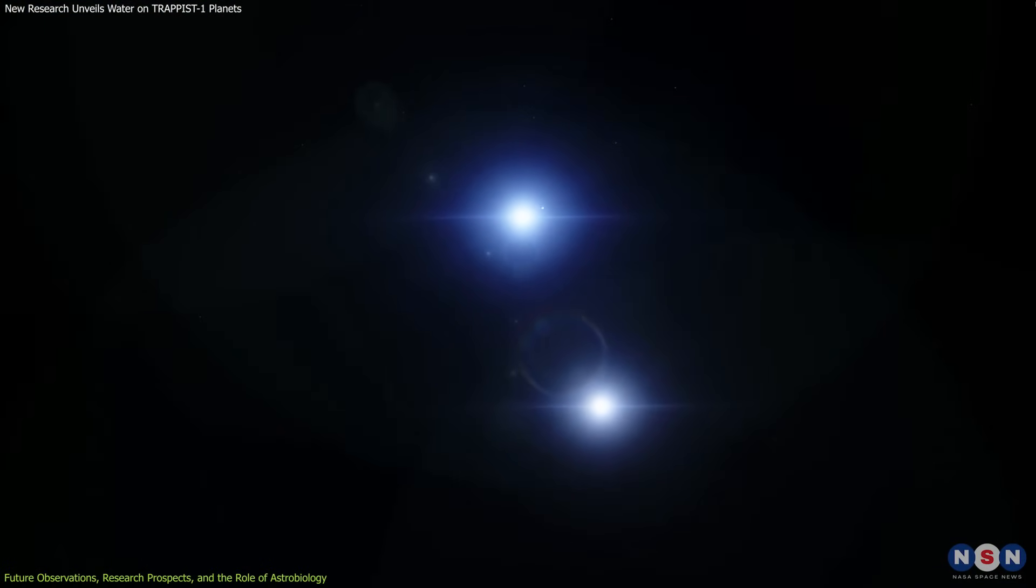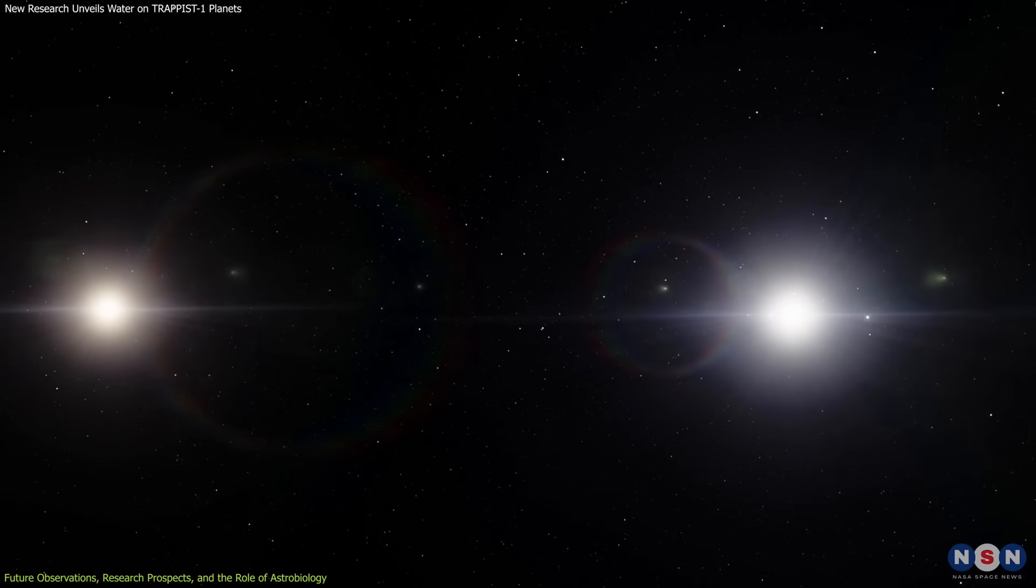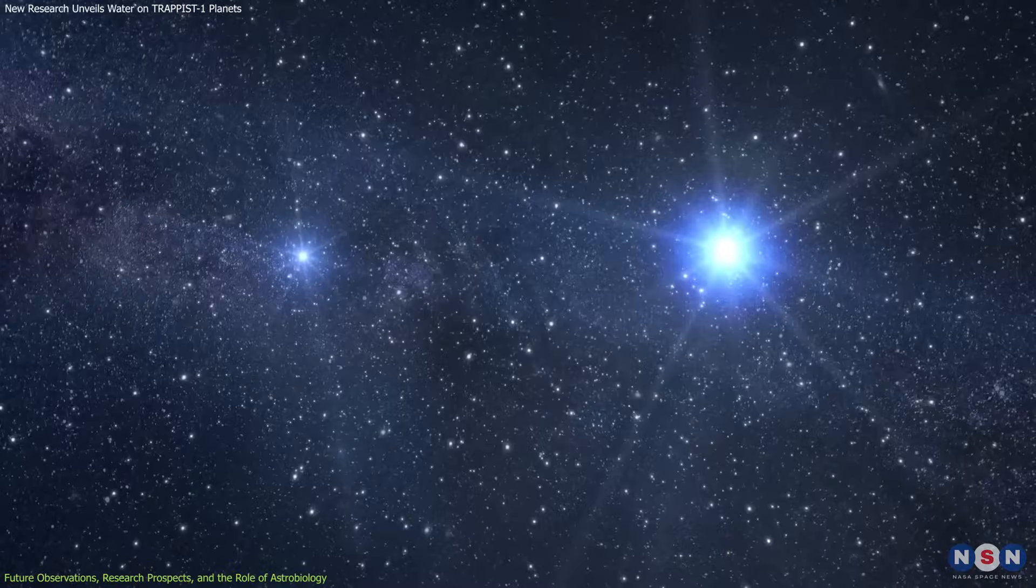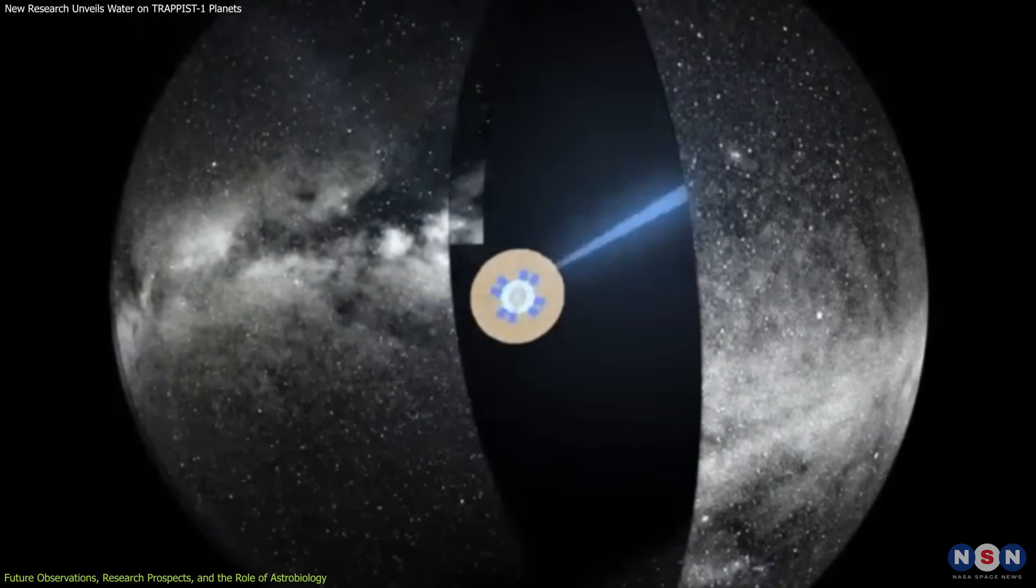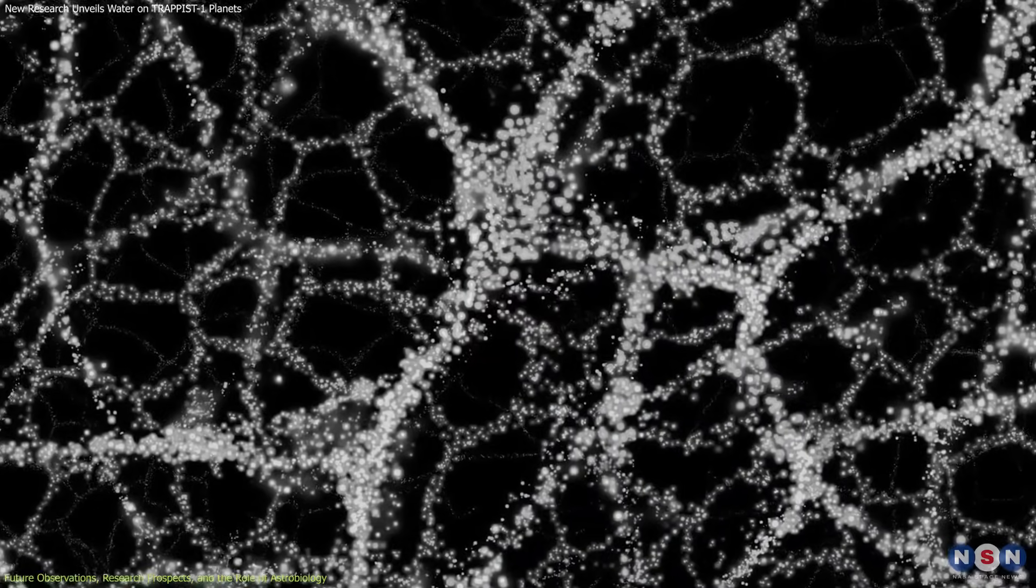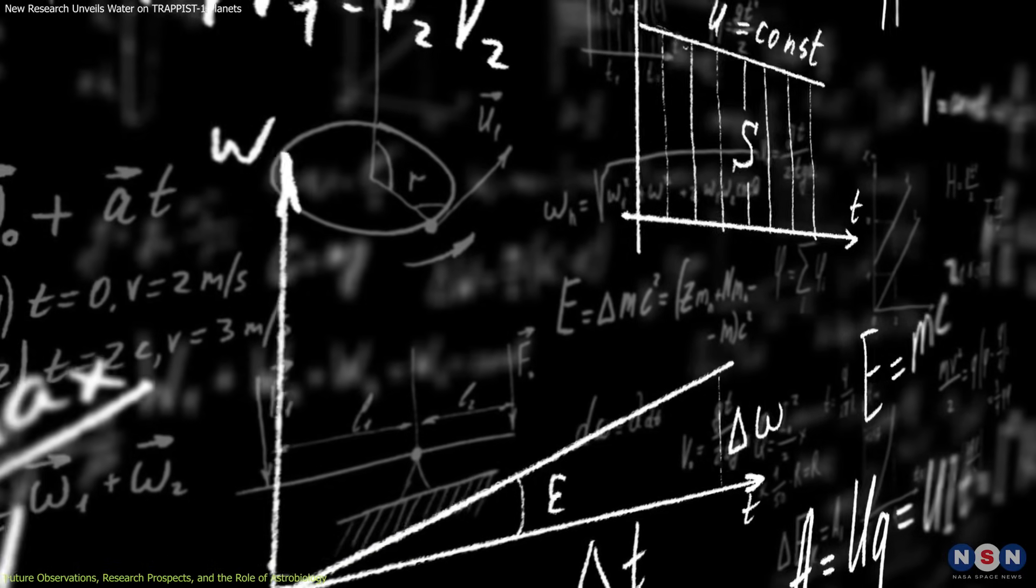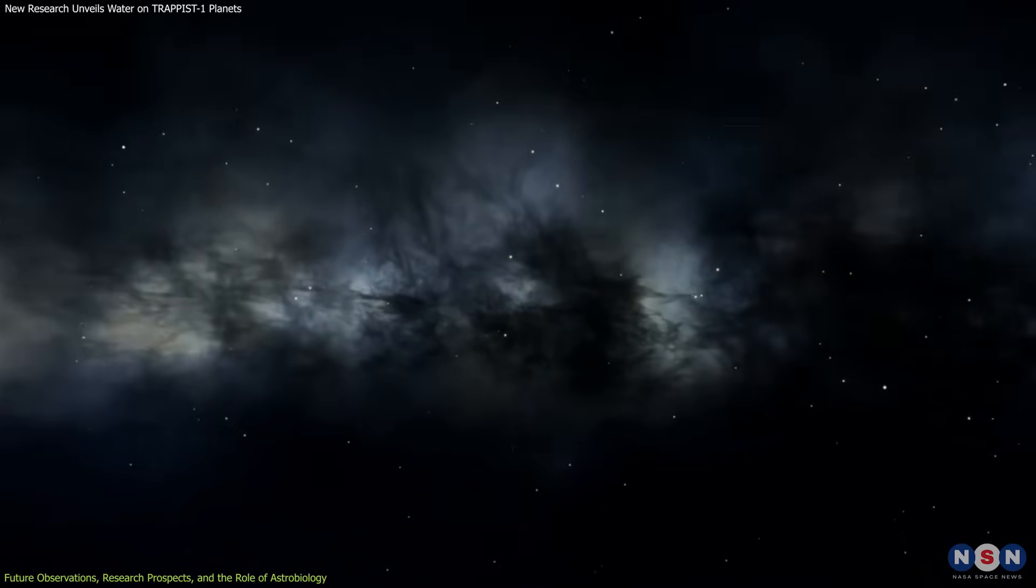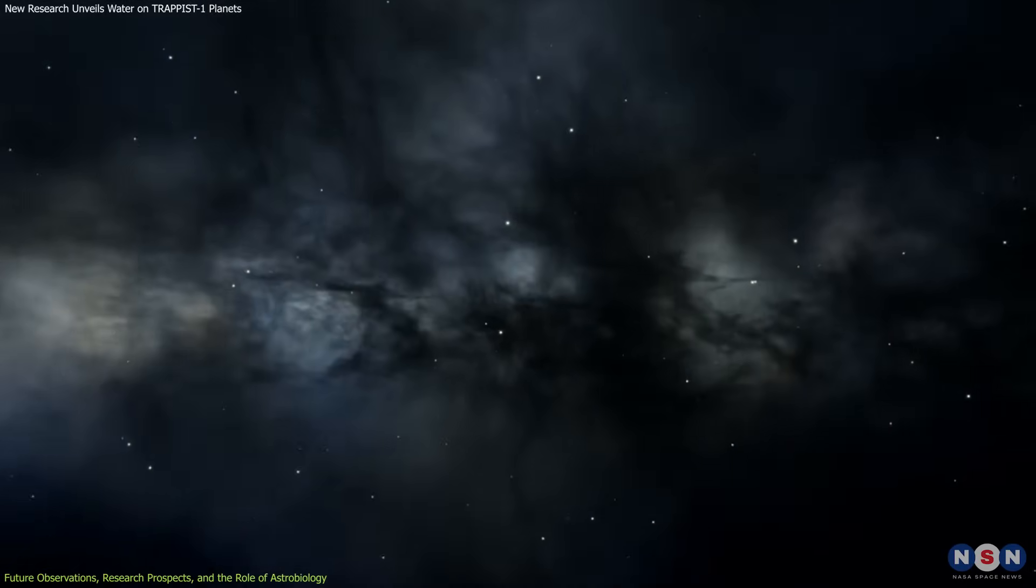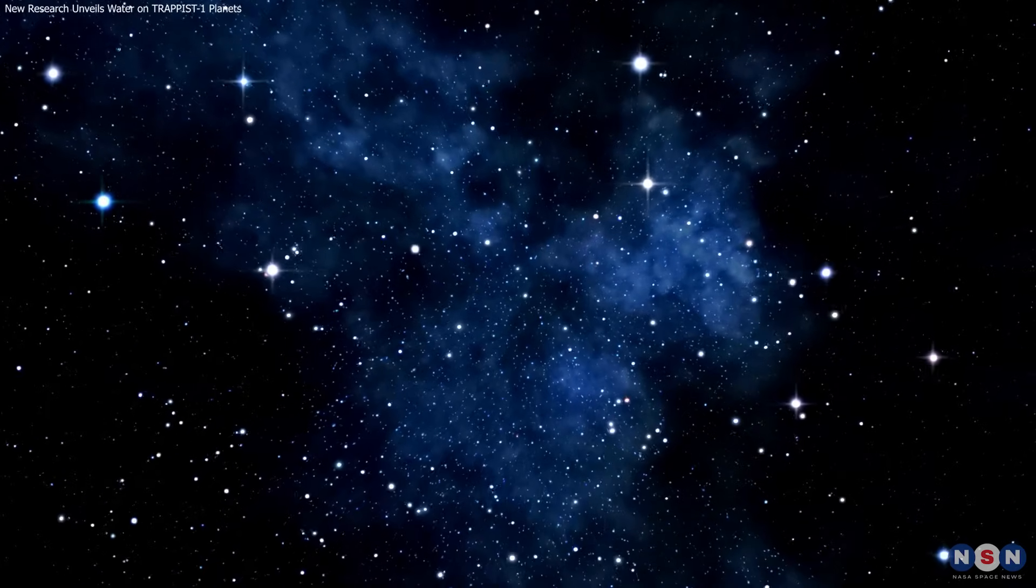In conclusion, the investigation into dark matter's influence on binary star systems and the broader implications of this research represents a significant pivot in our understanding of the cosmos. By integrating observations from binary stars with advanced detection technologies and theoretical frameworks, this field of study not only seeks to uncover one of the universe's most compelling mysteries, but also pushes the boundaries of what modern physics can explain. Future research will likely continue to blend these approaches, increasingly relying on interdisciplinary collaborations that could one day crack the dark matter enigma, reshaping our understanding of the universe's fundamental components.